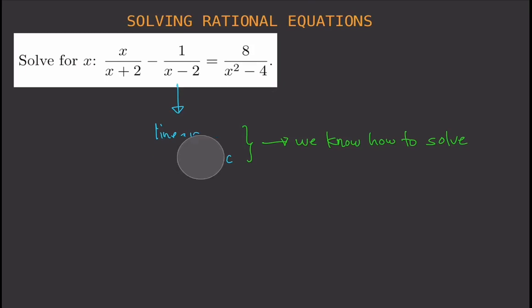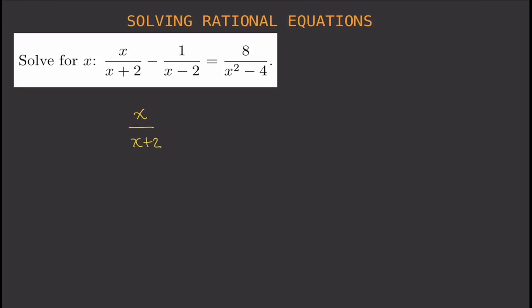Let's do that for this example. The equation is: x divided by (x plus 2), minus 1 divided by (x minus 2), equals 8 divided by (x squared minus 4). What we want to do is get rid of the denominators by multiplying both sides by the LCD — that's what we did in the previous video.